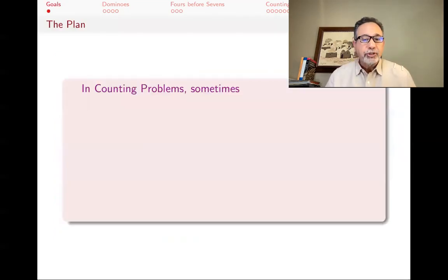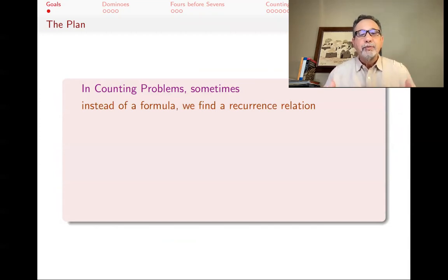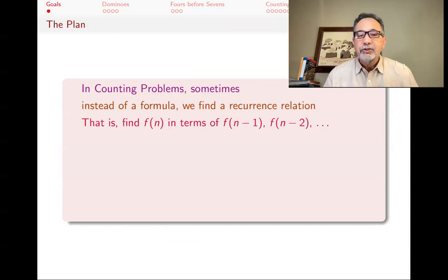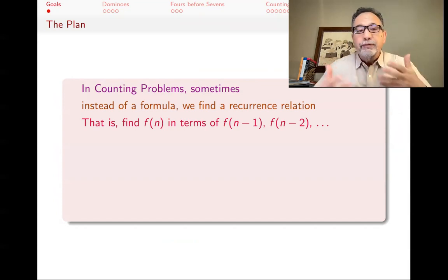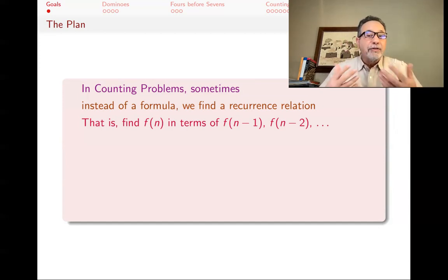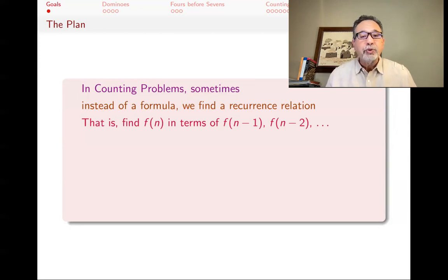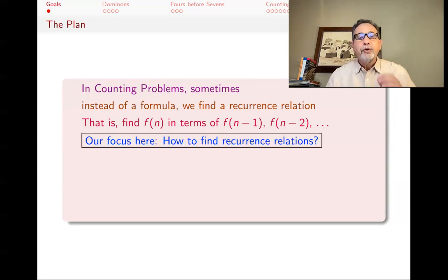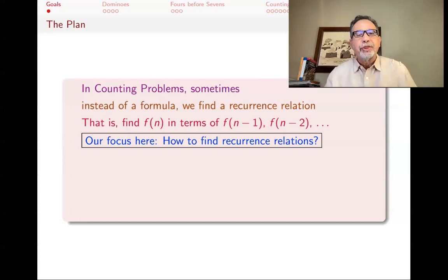In counting problems, sometimes instead of trying to find a formula for whatever it is that we are going to count, we find a recurrence relation. A recurrence relation defines a function in terms of its prior occurrences. Instead of finding a formula for f(n) — where f(n) might be the number of ways of doing something — we find f(n) in terms of f(n-1), f(n-2), and so forth. This doesn't give us a formula for f(n), but it allows us to calculate as many terms of that sequence as we would like. Our focus in this lecture is how to construct or come up with the recurrence relations — not what to do afterwards, but how to come up with them.